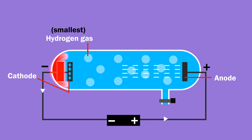Since these rays were traveling from anode to cathode, they were called anode rays.